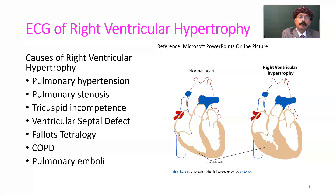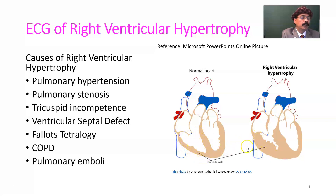What is Right Ventricular Hypertrophy? Our heart has four chambers: the left ventricle, right ventricle, right atrium, and left atrium. When there is hypertrophy in the wall of the right ventricle, we call it Right Ventricular Hypertrophy. This is the normal heart, and this is the heart with Right Ventricular Hypertrophy. Hypertrophy means the increase in the size of the cell, not an increase in the number of cells.